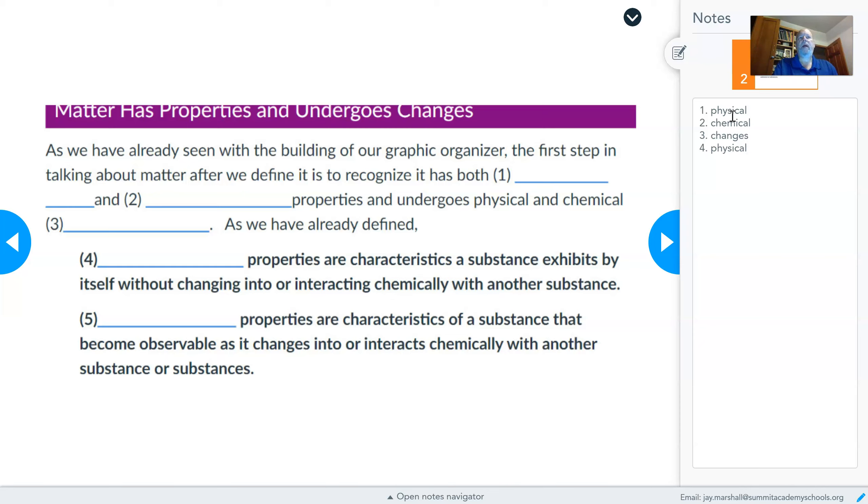For example, I have water in the solid state. That's a physical property. A chemical property of hydrogen, on the other hand, would be that it can combine with oxygen to form water. It has the ability to do that. So that's a chemical property. It has the ability to do something chemically.